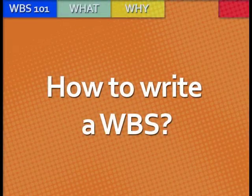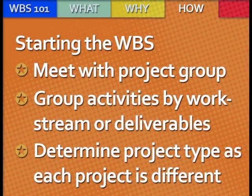How to write a WBS. To start writing a WBS, you need to get with your group and go over the best way to deliver the project. You will group the activities by work stream or by deliverables. You need to know what kind of project you have, because each setup is different in terms of scope, resources, time frames, or budget. All these terms impact the way you detail the phases.